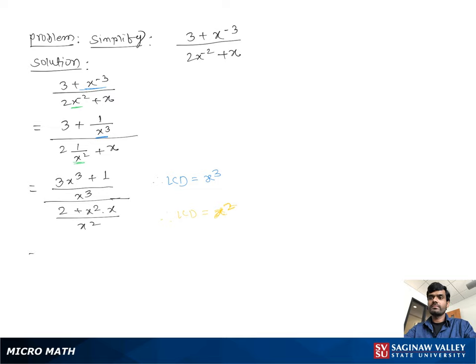Now we keep the numerator part as it is then we reciprocate the denominator part. You can add 3x cube plus 1 over x cube times, then you flip the denominator part you get x square over 2 plus x cube.